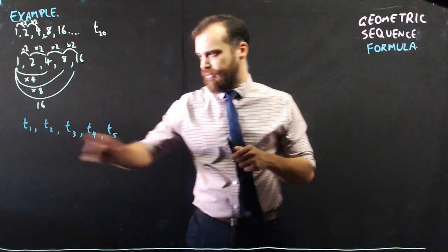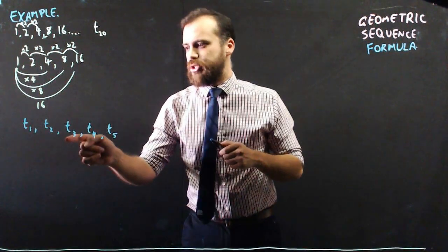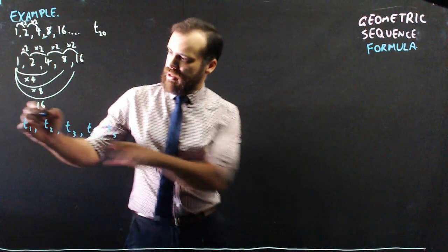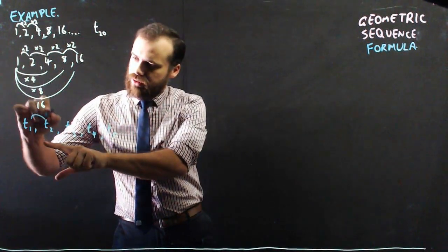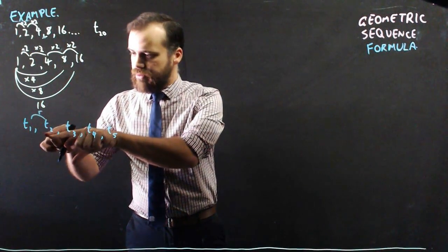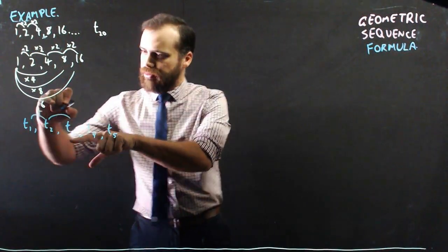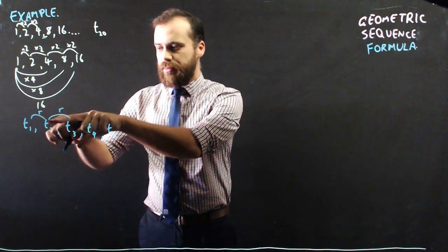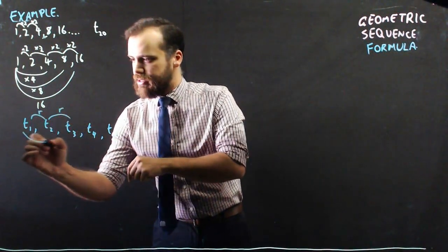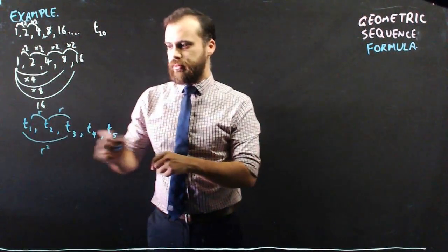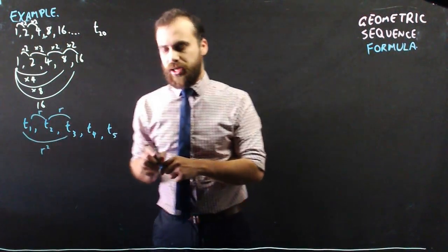More generally, if I've got term 1 followed by term 2 followed by term 3 followed by term 4 followed by term 5, and it's a geometric sequence, to get from term 1 to term 2, I multiply by R. And then to get from term 2 to term 3, I multiply by R. Now, multiplying by R and then multiplying by R is the same as multiplying by R squared. That's the third term, and I'm multiplying by R squared to get there.